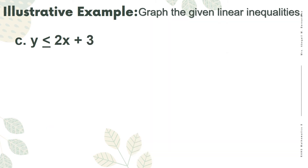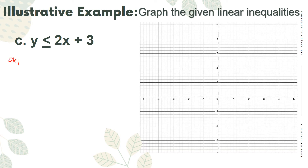For letter C, we have y is less than or equal to 2x plus 3. Step 1: change the inequality into an equation — y equals 2x plus 3. The y-intercept is positive 3 and the slope is equal to 2 over 1.